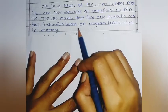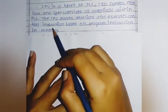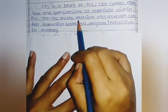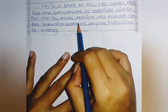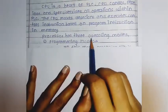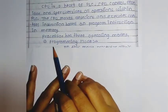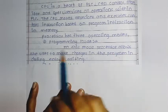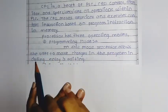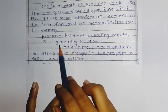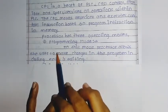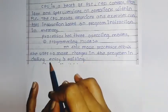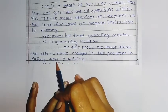The processor has three operating modes. The first is programming mode. In this mode, the processor allows the user to make changes in the program, including entry and editing of the program.